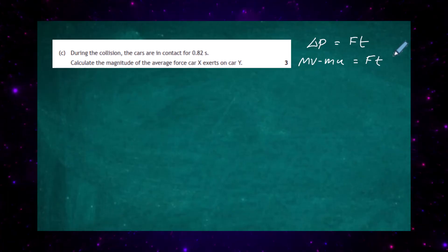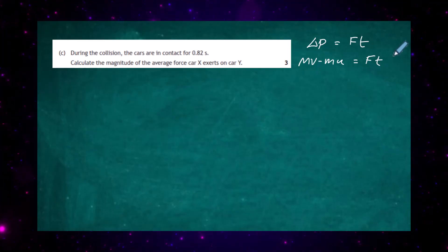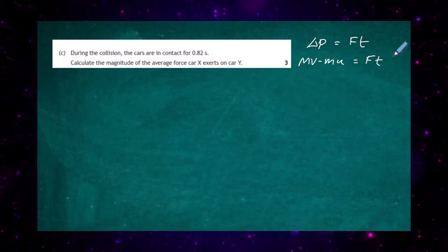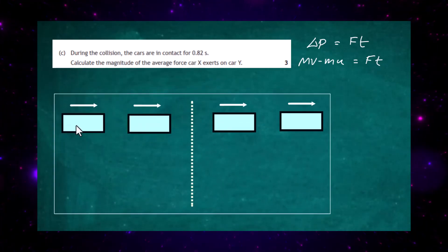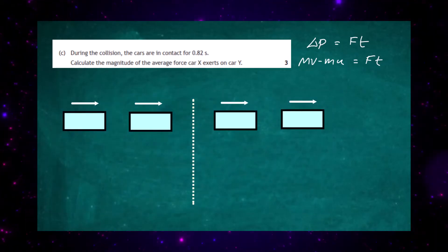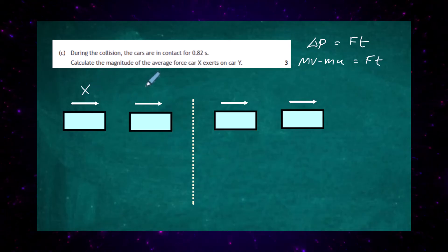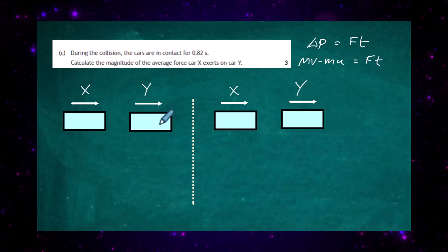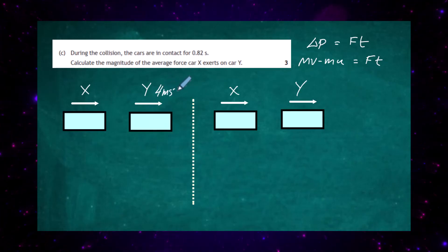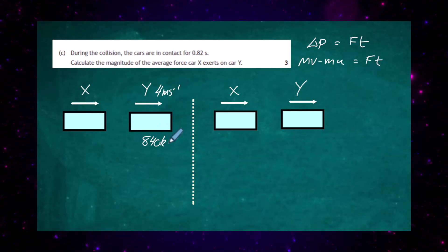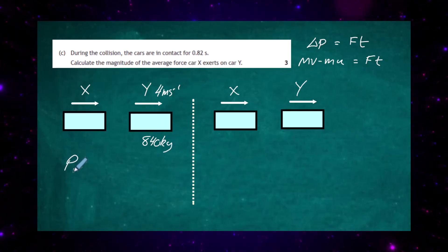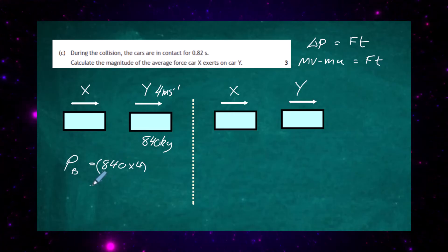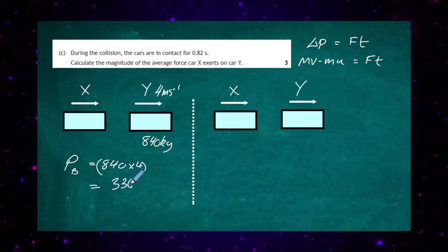If we find the change of momentum of car Y, we can find the impulse given to car Y, and from that calculate the average force. We focus on car Y in the diagram. Before the collision, car Y travels at 4 meters per second with a mass of 840 kilograms. Its momentum before is 840 × 4 = 3,360 kg m s⁻¹.